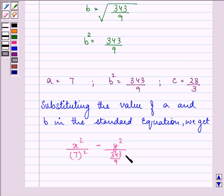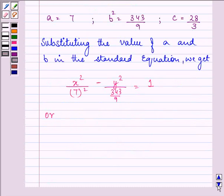Or we can write it as x square by 49 minus 9y square by 343 is equal to 1. And thus this is the required equation of the hyperbola.